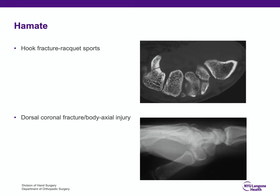Hamate fractures are one of the most common types of carpal bone fractures, and they can come in one of two ways. The hamate hook fracture can result from a direct blow from a fall, but it's often associated with racket sports like golf, hockey, and tennis. The dorsal coronal fracture, or body fracture, is usually from an axial injury similar to a boxer's fracture of the little finger metacarpal neck.